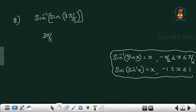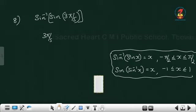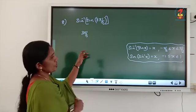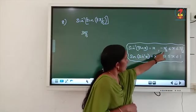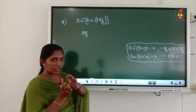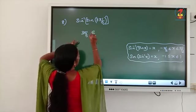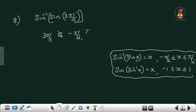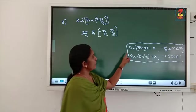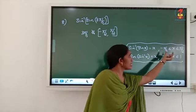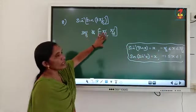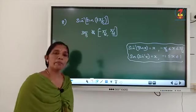So we cannot write sin inverse sin x equals x here since x is not in the interval [-90, 90]. We have to do some simplification. Sin is positive in the first and second quadrant, and sin theta equals sin of pi minus theta. So instead of this theta we can write pi minus 3 pi by 5. That equals sin inverse of sin of 5 pi minus 3 pi by 5, which equals sin inverse of sin of 2 pi by 5. We cannot write the answer as 3 pi by 5.